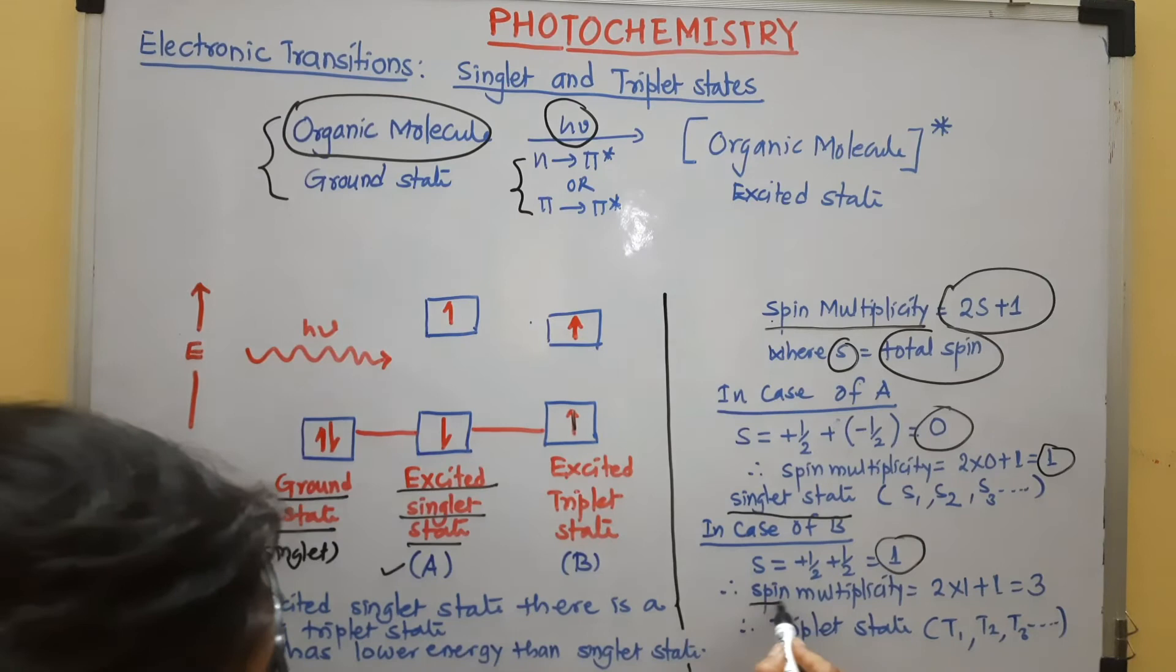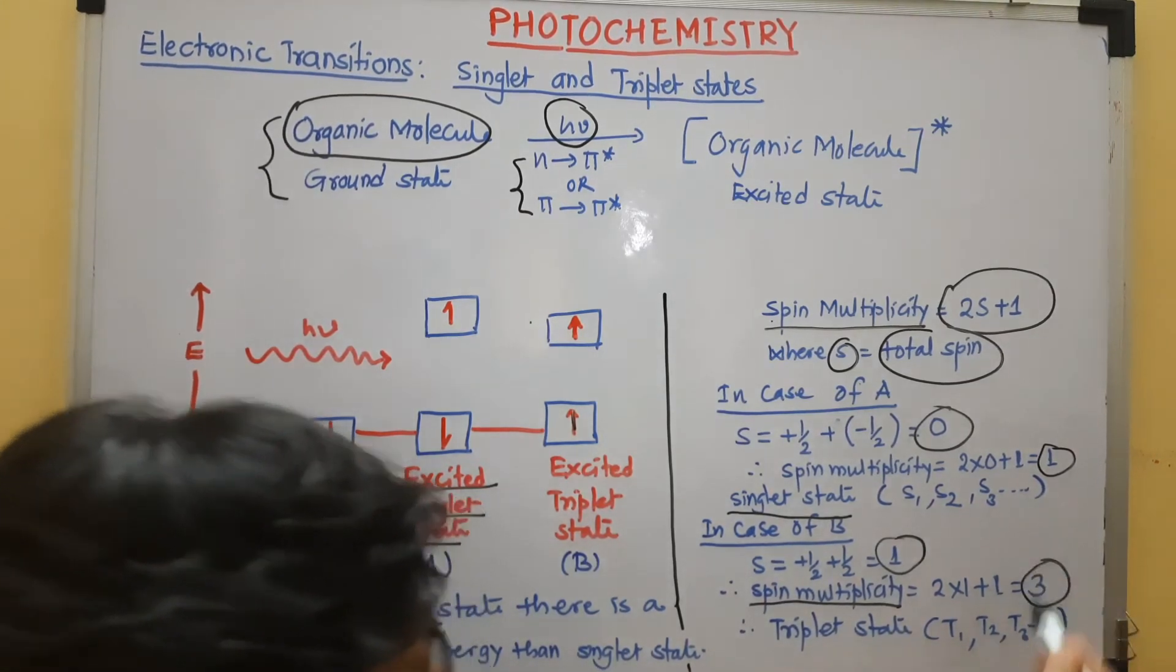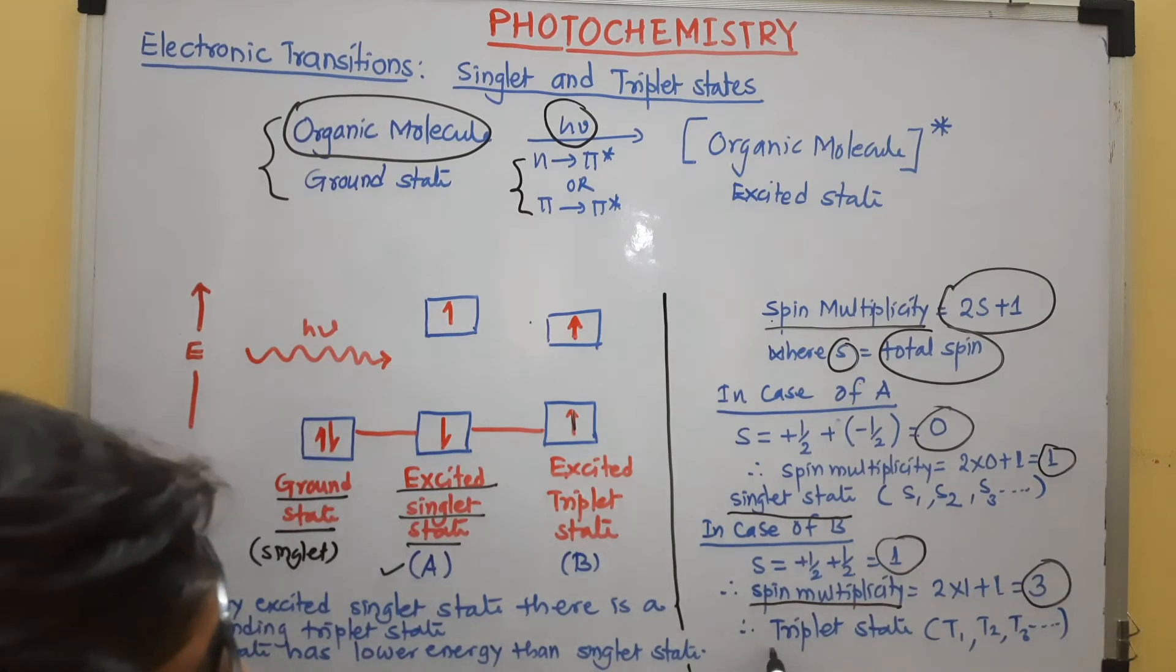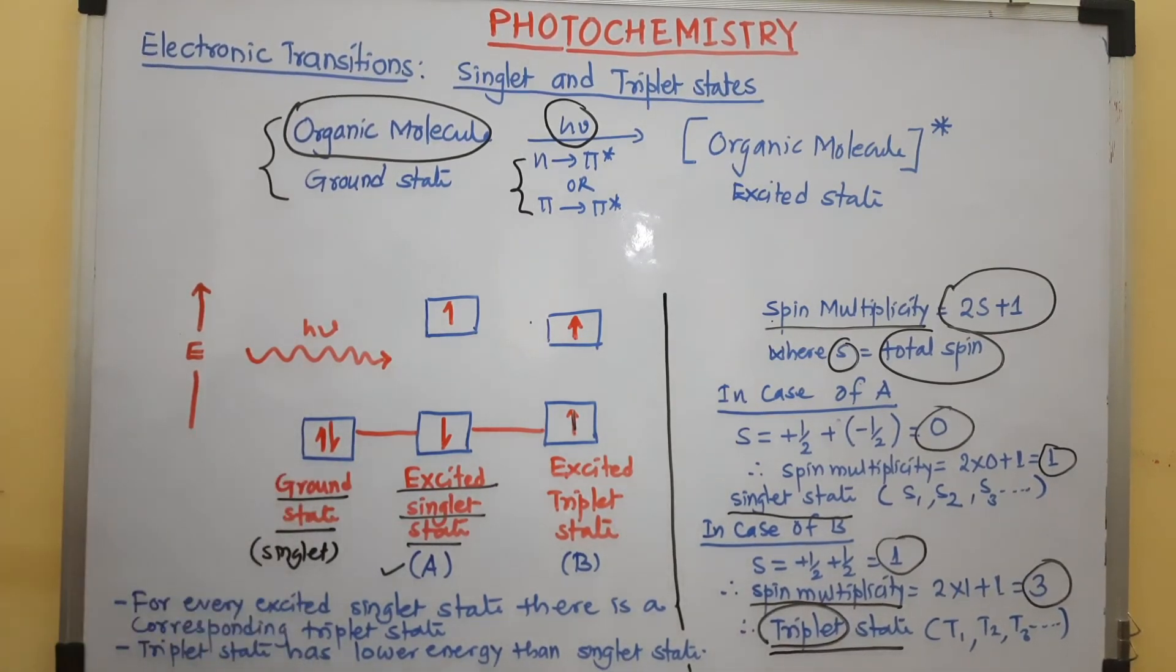When you put that value in spin multiplicity, you get here spin multiplicity 3 because of that, that triplet word is coming. So, this is a triplet state. After excitation, electron of the molecule, we get singlet state and the triplet state.